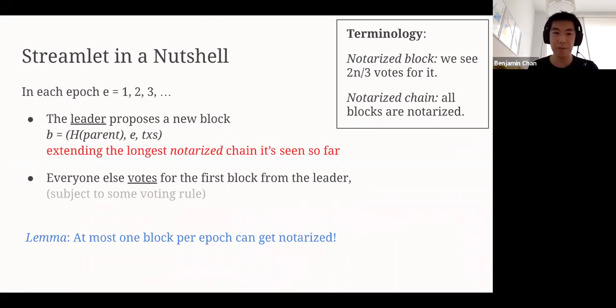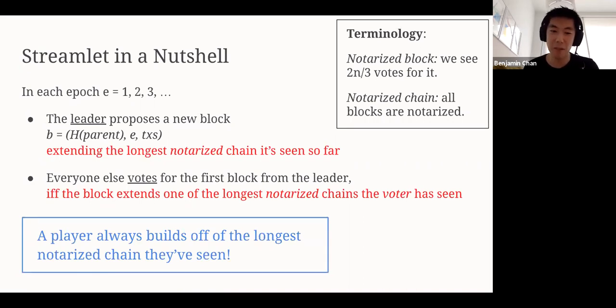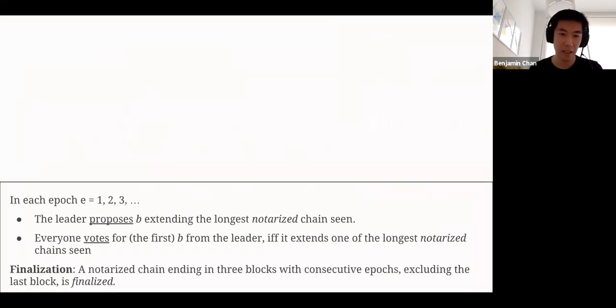Now let's finish the protocol description. How does a leader propose a new block? Well, it chooses to extend the longest notarized chain that it's seen so far. How do voters decide what block to vote for? They vote for a block if and only if that block extends one of the longest notarized chains that the voter has seen. A player is always building off of the longest notarized chain that they've seen. That's really nice and really natural in our opinion. Of course, such a natural voting rule also gives rise to a very natural finalization rule. We say that a notarized chain ending in three blocks with consecutive epoch numbers is finalized, chopping off the last block. We'll see an example of this very soon. I'll put the protocol at the bottom here for your reference. Let's walk through an example now.